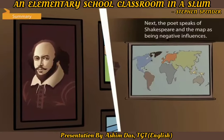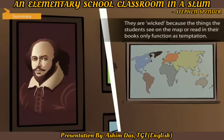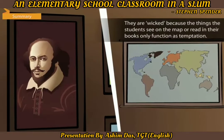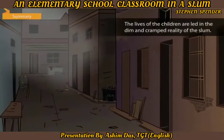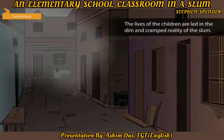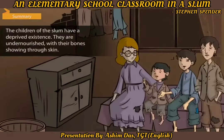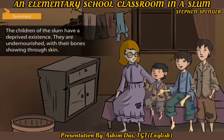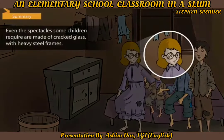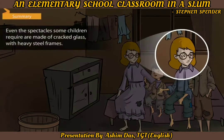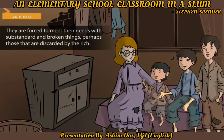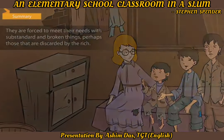The poet speaks of Shakespeare and the map as being negative influences. They are wicked because the things the students see on the map or read in their books only function as temptation. The lives of the children are led in the dim, cramped reality of the slum. They are undernourished with their bones showing through skin. Even the spectacles some children require are made of cracked glass with heavy steel frames.